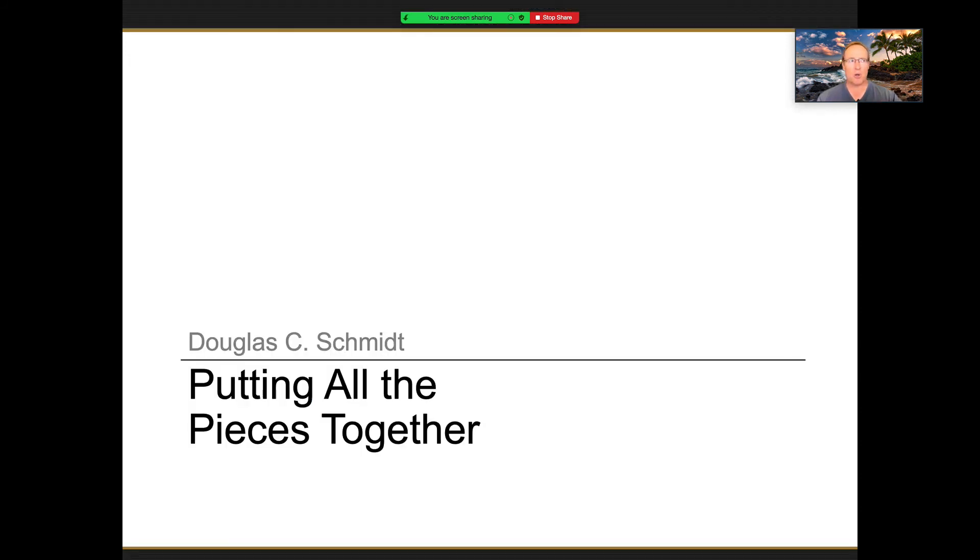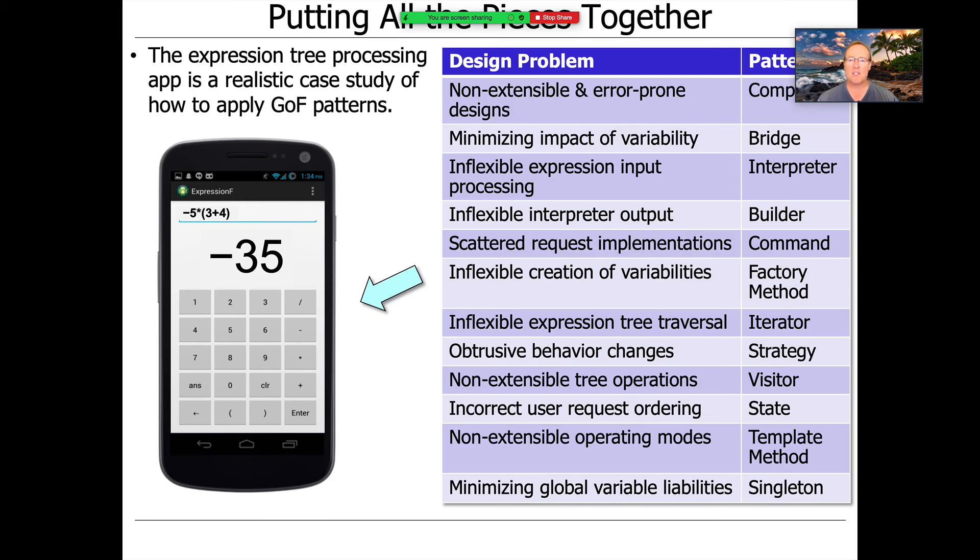So let's kind of put all the pieces together here. The purpose of this case study is to show how to apply Gang of Four patterns in something more concrete than just talking about them in the abstract. And it's also about showing how the patterns fit together. So in addition to talking about the patterns in isolation, which, of course, are important, we're also going to talk about relationships between the patterns. And that's a sort of a second-level black belt approach to understanding software design.